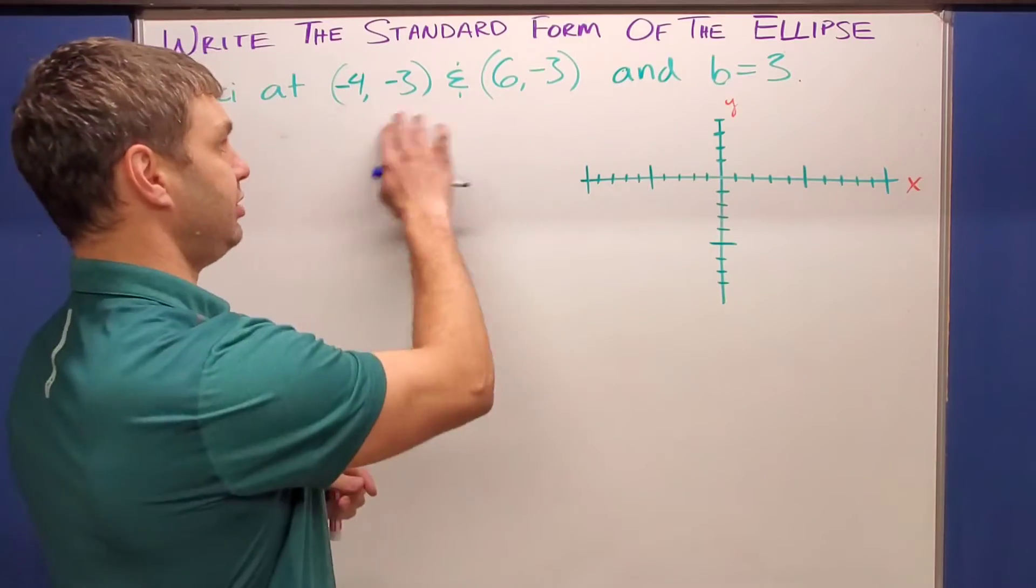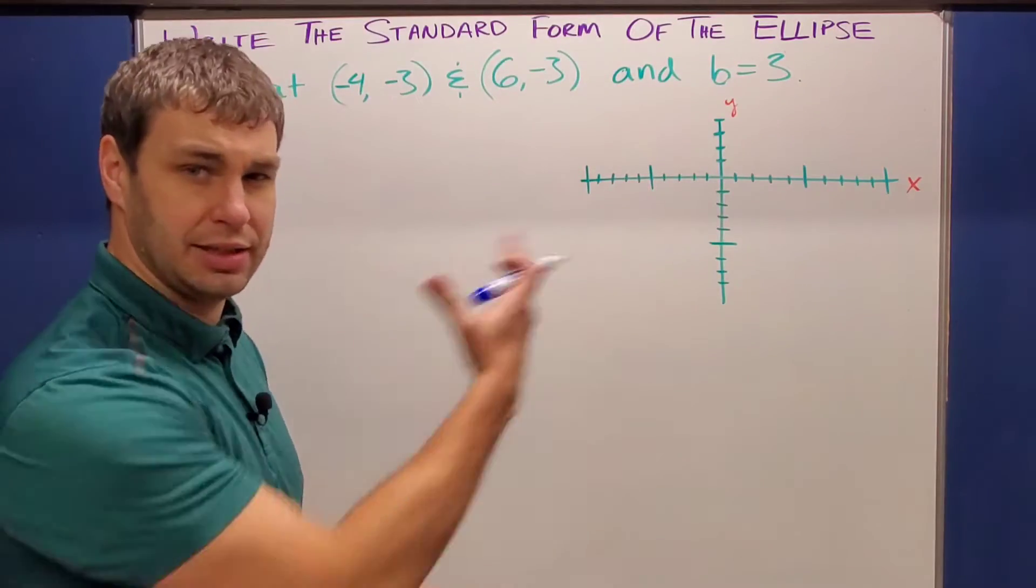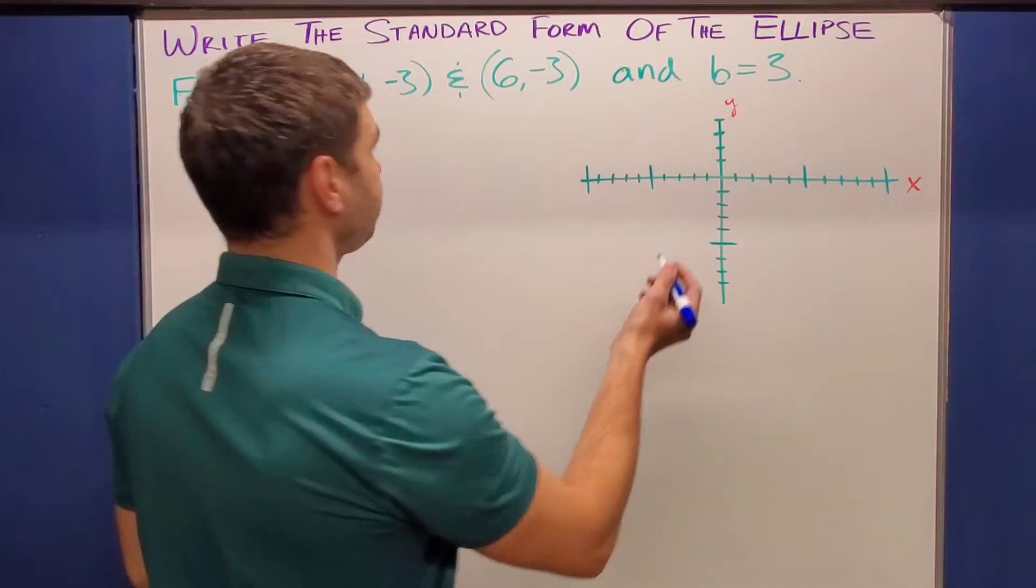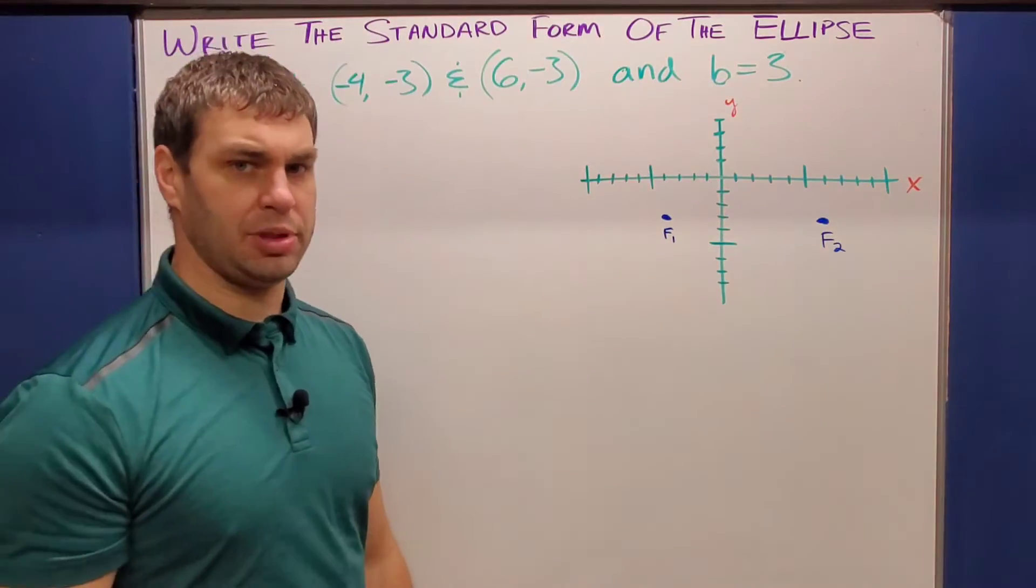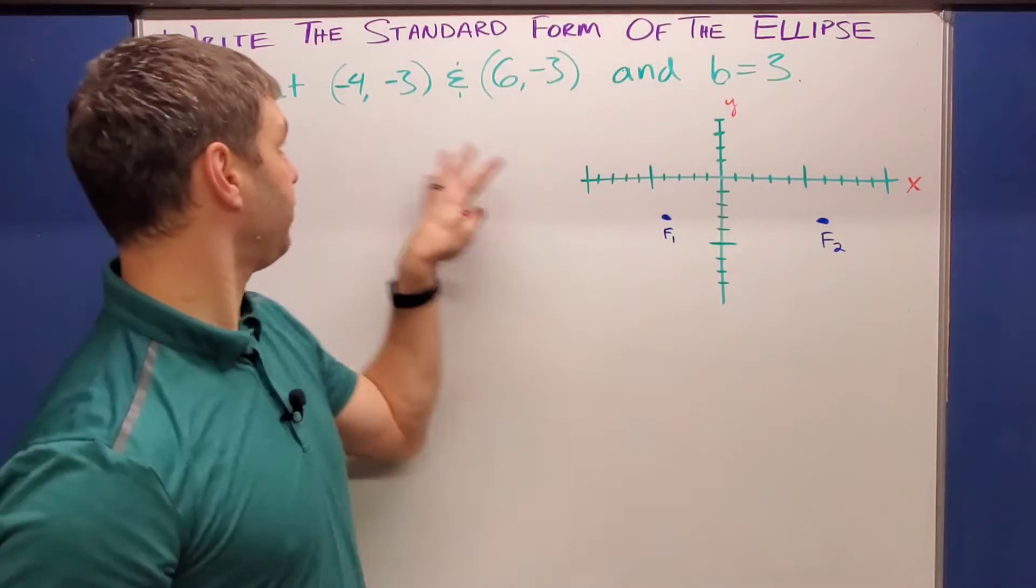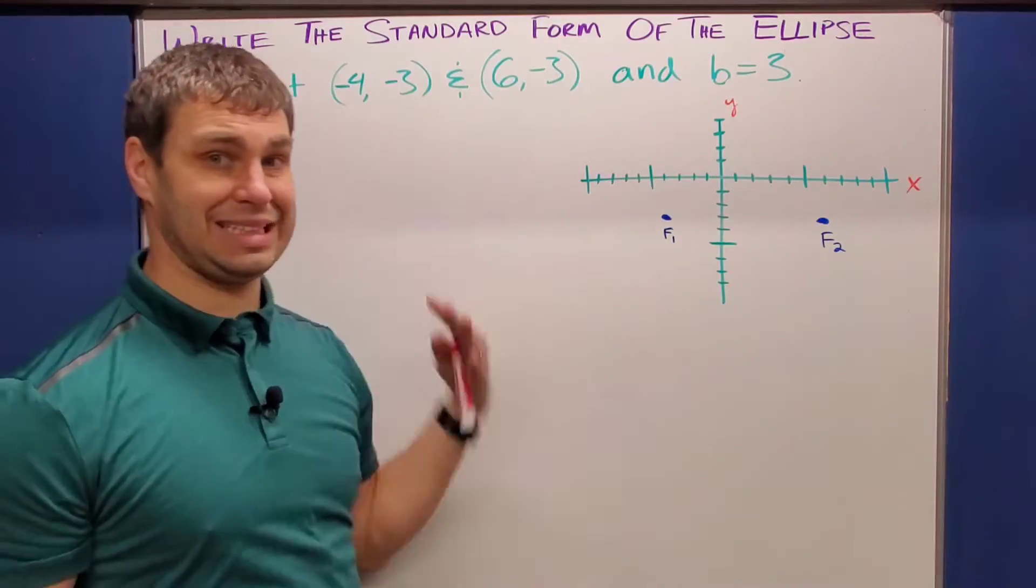So let me graph these two foci and let's kind of see what that looks like on the graph provided over here. All right. So I labeled the two foci as F1 and F2 for these two points, negative four, negative three, and six, negative three.